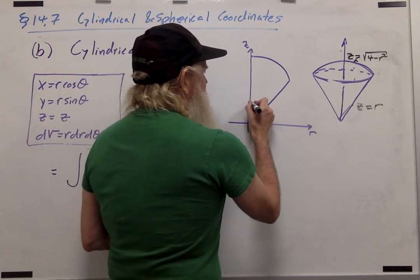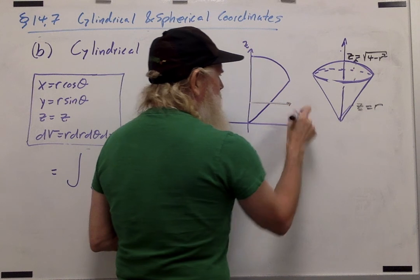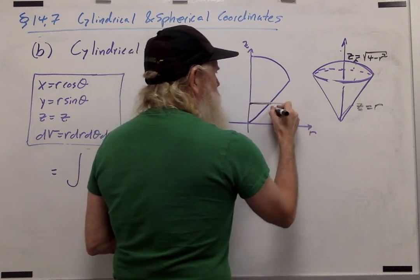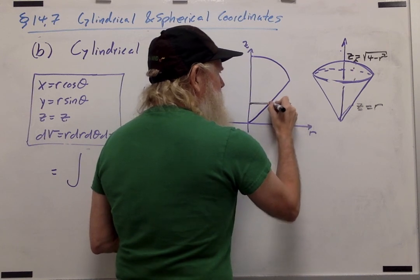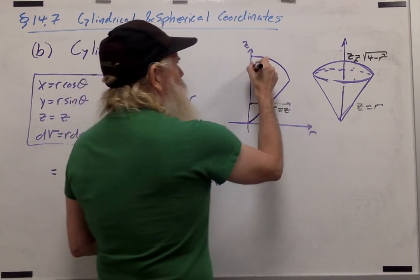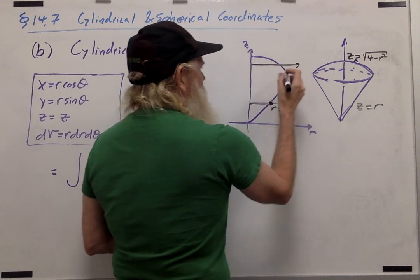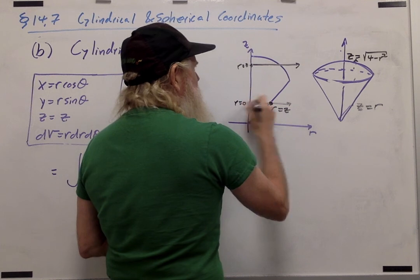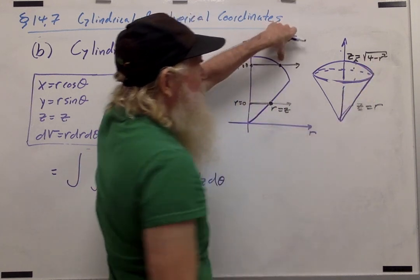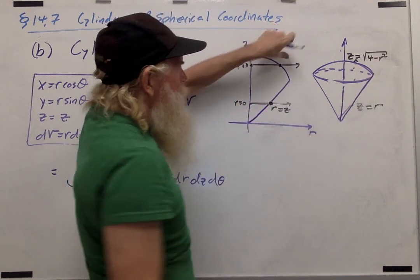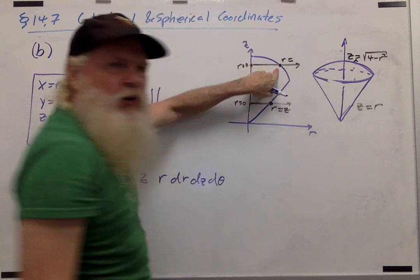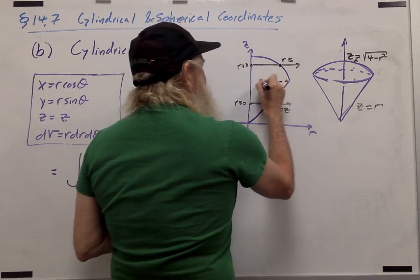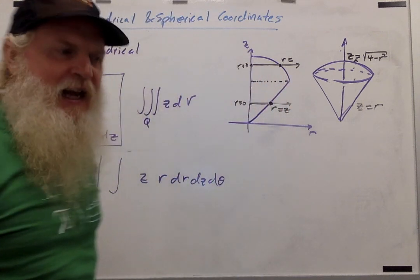But look, if I slice down here parallel to r, then I would be going from r equals zero out to r equals z, whereas up here, if I go outward, I would be starting off at r equals zero, but I'd be ending on the sphere. So I need to write r equals whatever the equation is for the sphere. So notice that I would have to end up taking two different integrals and adding them together.